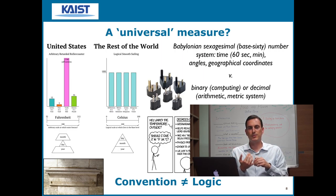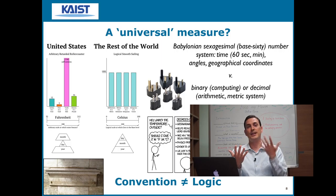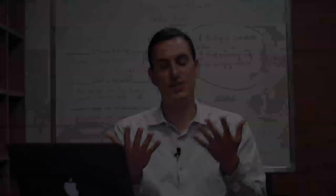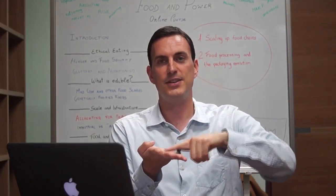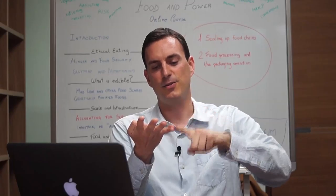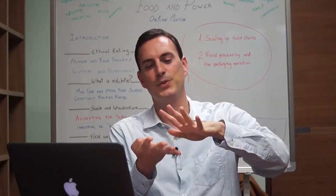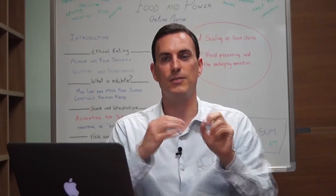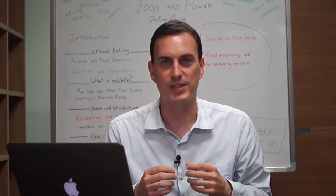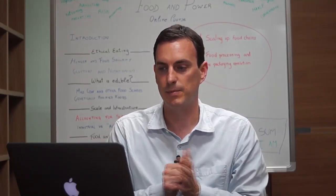The Babylonian base-60 system is grounded in the human hand: you have four fingers on one hand, each with three segments, giving 12 counts per hand, and five fingers on the other hand to track groups — eventually reaching 60. In a system where you had to do fast math and your technology were your hands, this was actually very rational. Later, when written systems developed, the base-10 system became more rational.